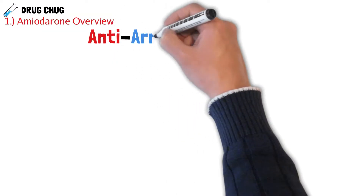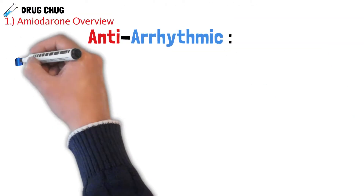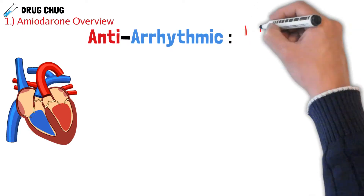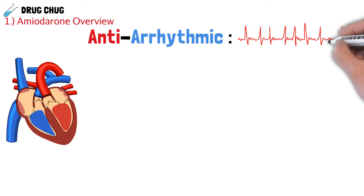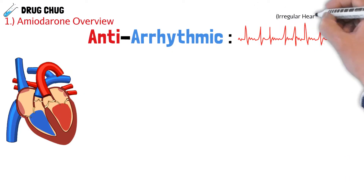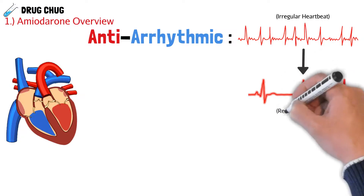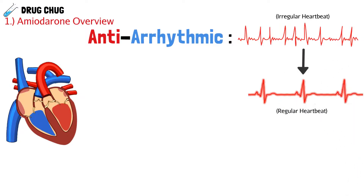To first understand amiodarone, we need to have a quick overview. Amiodarone is known as an antiarrhythmic, which basically means if a patient has an irregular heartbeat, we use amiodarone to make that irregular heartbeat regular. So it works on the heart.